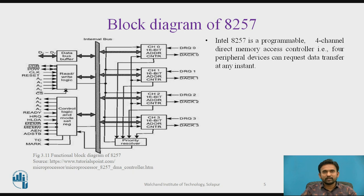Here you can see the block diagram of 8257. The internal data bus divides the 8257 into two parts. The right side has different functional blocks — these are the DMA channels — and the other side has different functional blocks: control and mode set register, read-write logic, and data bus buffer.